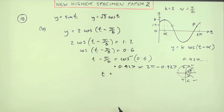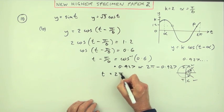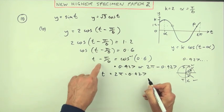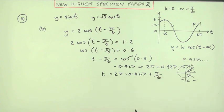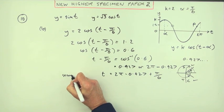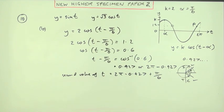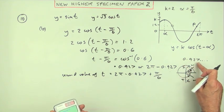So that means t is going to be 2 pi minus that. Might as well not work it out just now. It's going to be 2 pi minus 0.927 plus pi upon 6, because I want the second answer. Second value of t is that. You're going to put that into your calculator first of all and then add to the pi upon 6, but why not just do it all at once.